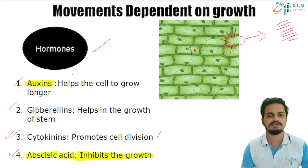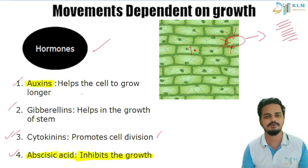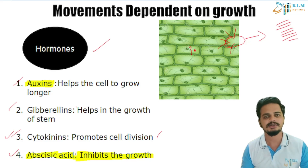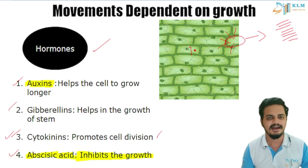So students, I hope you have understood about movements dependent on growth in plants. What about humans — do we also have hormones? Of course we have so many hormones and they also play a major role in all of our life processes. We will look into that in the next part. This is the end of part two — see you in part three, students. Have a great day!